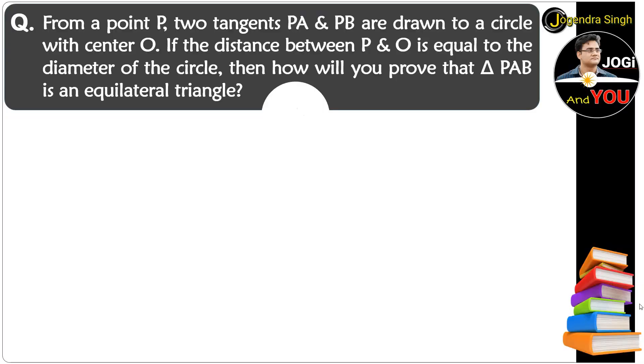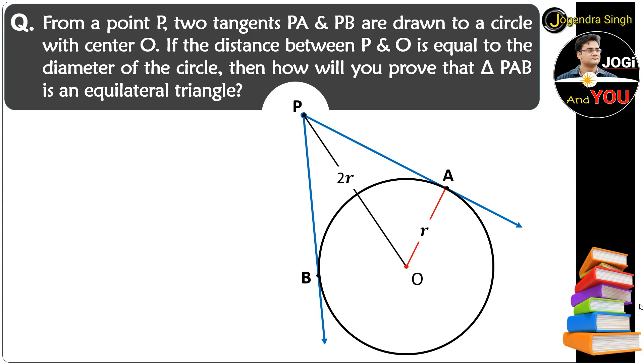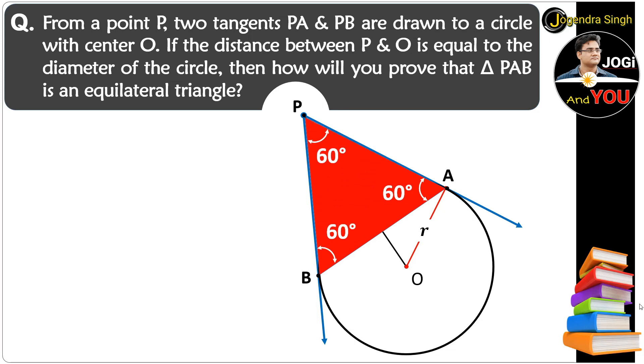Here is our question: From a point P, two tangents PA and PB are drawn to a circle with center O. If the distance PO is equal to the diameter, then how will you prove that triangle PAB is an equilateral triangle?